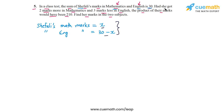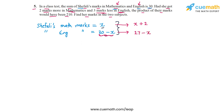The problem statement says had she got two marks more in math, her marks would have been x plus 2. And had she got three marks less in English, her marks would have been 30 minus x minus 3, which simplifies to 27 minus x. The problem says the product of their marks would have been 210.